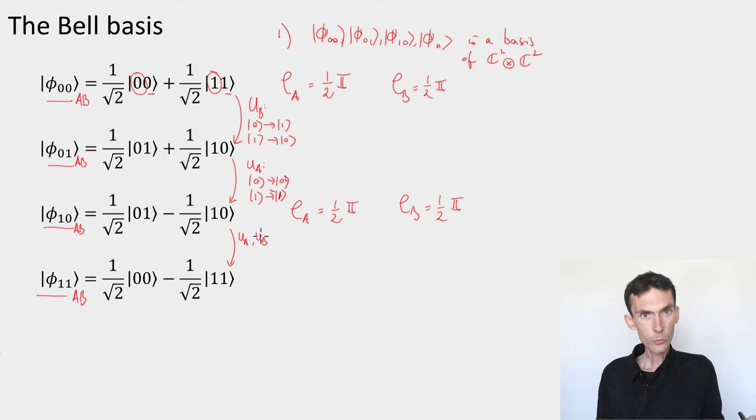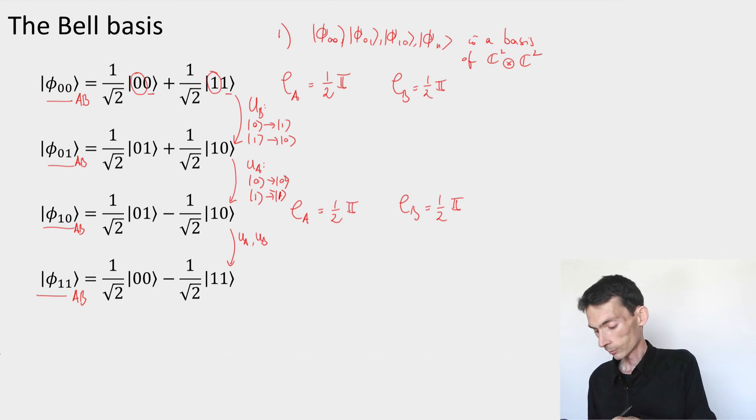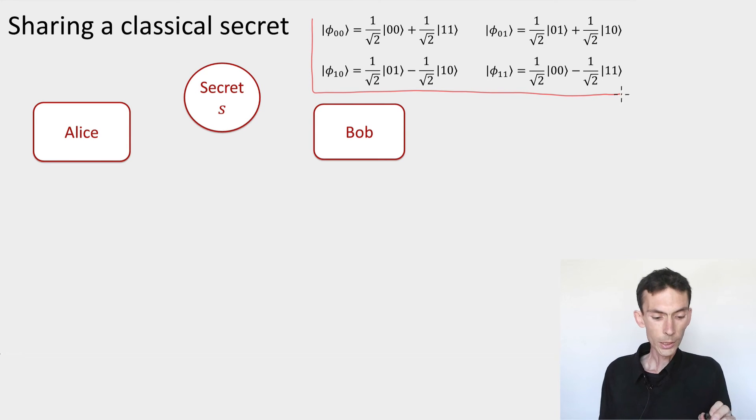All right, so that's the two important properties of the Bell basis. Now let's use this basis to construct a secret sharing scheme. So I put the Bell basis for you in the upper right here so that you can keep it in mind. And now we're back to sharing our secret.